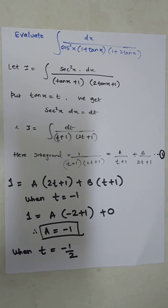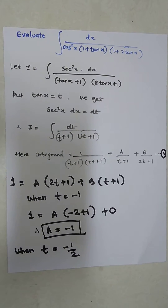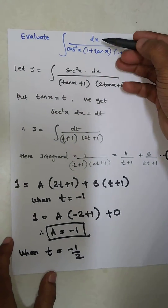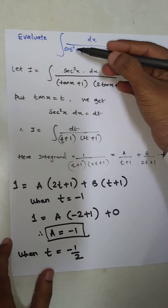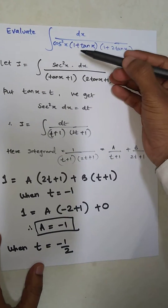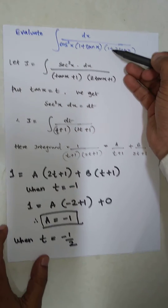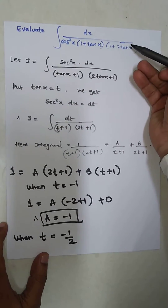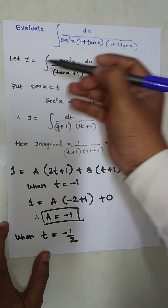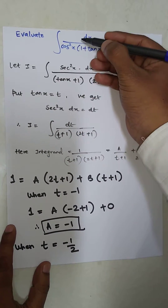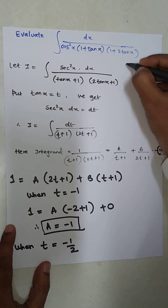Hello friends, today's topic is integration. We need to evaluate the integration of dx upon cos²x, inside the brackets (1 + tan x) and (1 + 2 tan x). Let I be equal to this integral — the first thing is 1 upon cos²x.